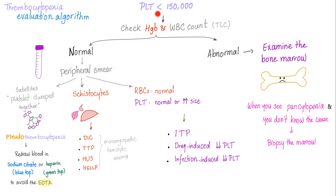In the previous video, we discussed the thrombocytopenia evaluation algorithm. When platelet count is low, the next step is to check hemoglobin and white blood cell count. If they are abnormal — meaning platelet, white blood cells, and red blood cells are all abnormal — examine the bone marrow. If normal, look at the peripheral smear. If you see satellites, it's pseudothrombocytopenia. If you see schistocytes, it's microangiopathic hemolytic anemia. If red blood cells are normal and platelet size is normal or increased, it could be ITP, drug-induced thrombocytopenia, or infection-induced thrombocytopenia.